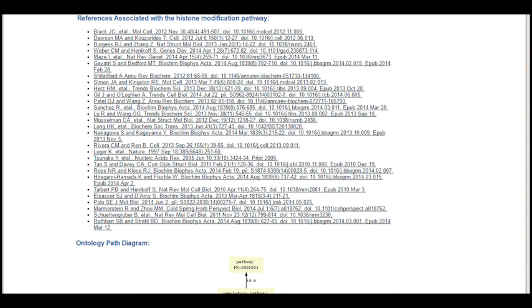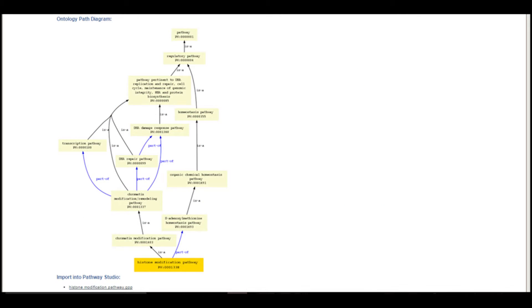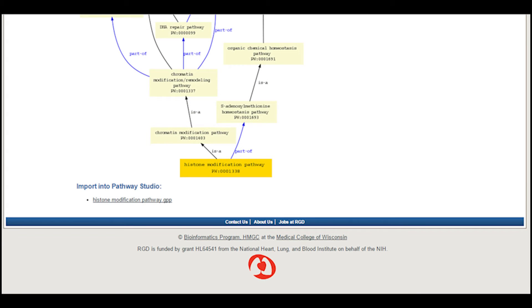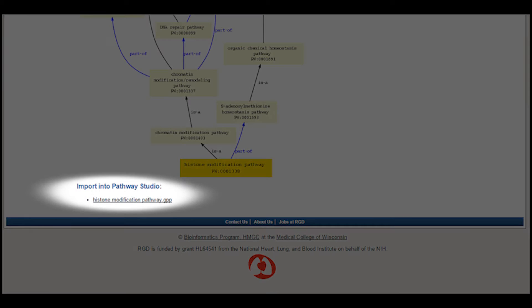At the bottom of the page is a list of references for the histone modification pathway and the ontology path diagram showing the tree structure between that pathway and the root of the ontology. If you have a copy of Elsevier's Pathway Studio software, use the link at the bottom of the page to save the GPP file and open it in the software.